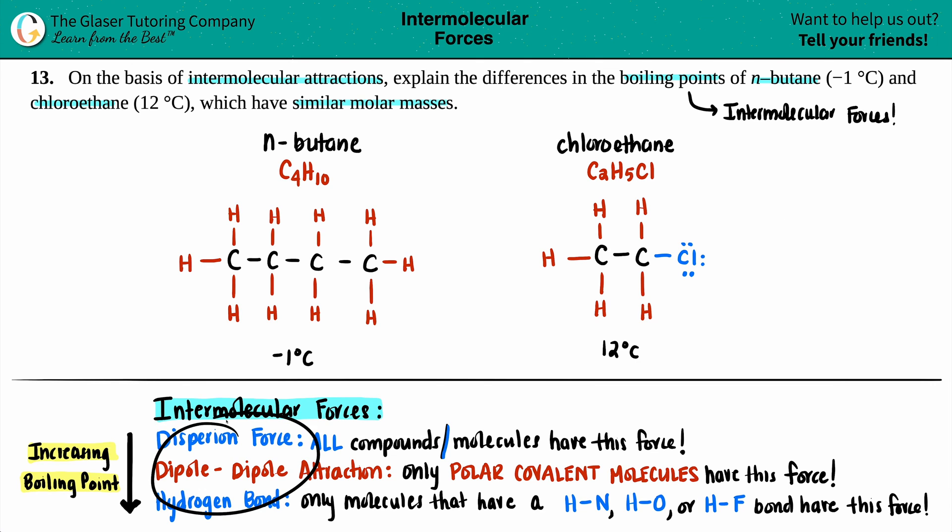There are three total intermolecular forces that you should know. As you start collecting intermolecular forces, your boiling point will increase. These are structured in a way that it's the most basic to the most specific intermolecular force. Your dispersion forces, which are also known as Van der Waals or London forces, just know that all compounds, no matter what's going on, will always have dispersion forces. So n-butane will have a dispersion force by default, and so will the chloroethane. That is not anything that's changing.